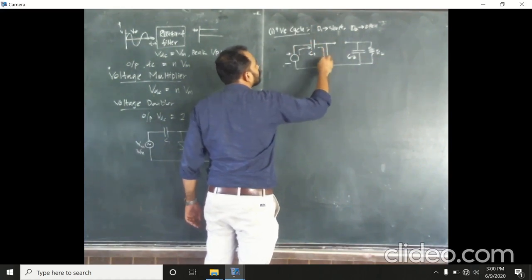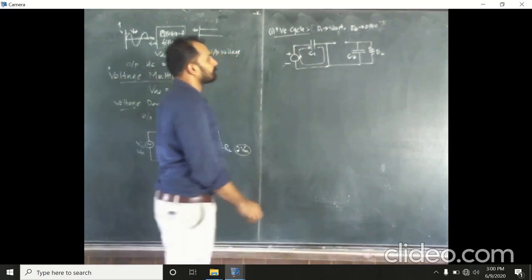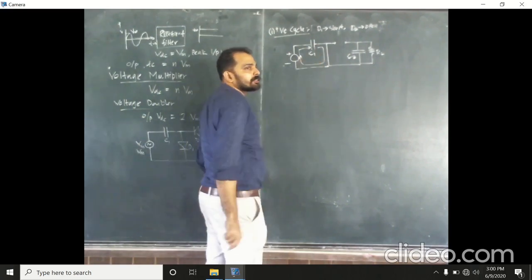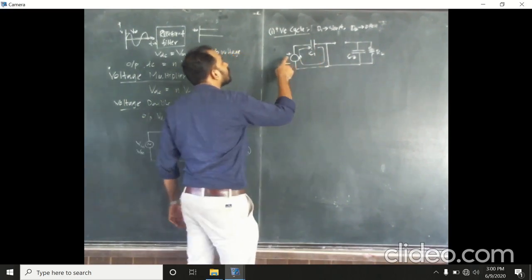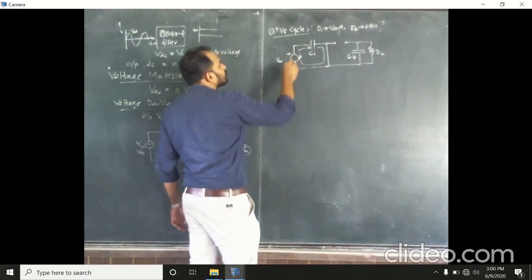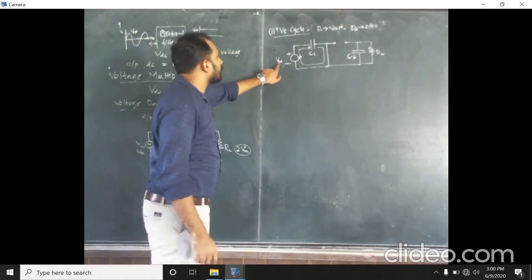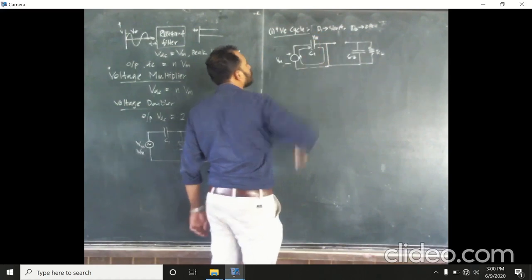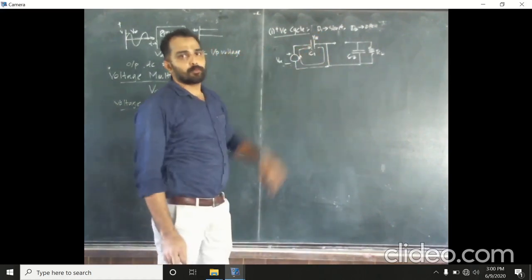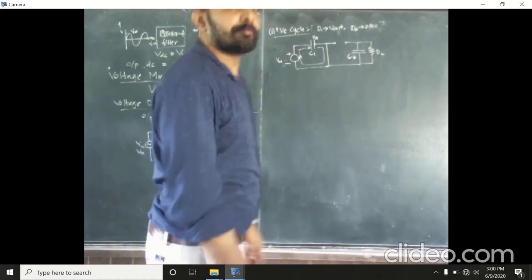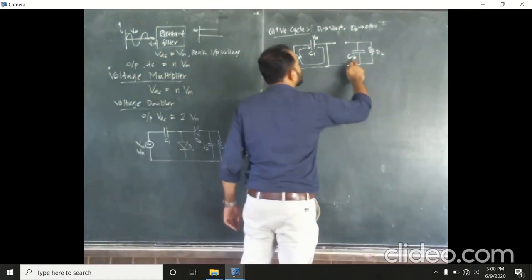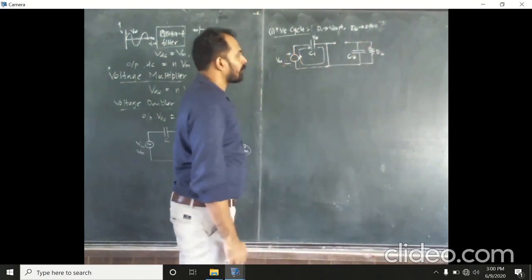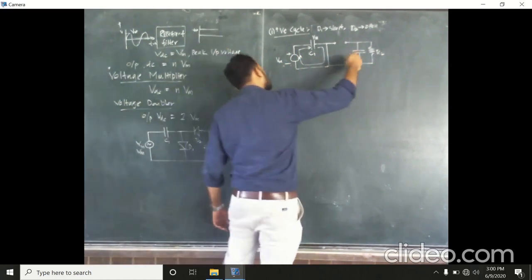The current will flow through this circuit in this way. This capacitor C1 will charge to the maximum voltage of the input source, which is the maximum voltage Vm. So, C1 will charge to the voltage Vm. And during the positive half cycle, C2 will discharge through the load resistance RL.